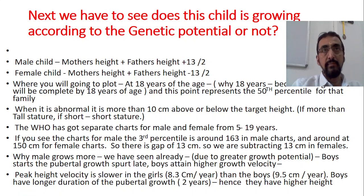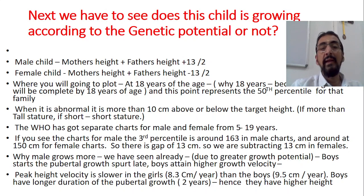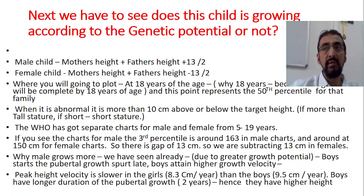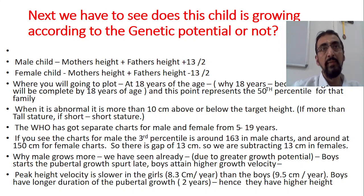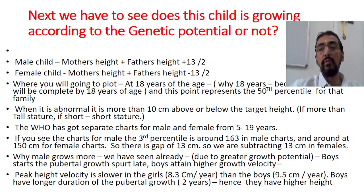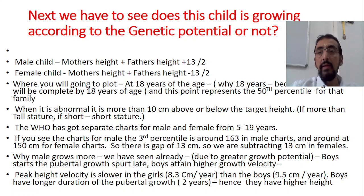Where do we plot this result from the parental height formula? We plot it at the eighteenth year of age on the growth chart, because we know the mother's and father's height and the mean average. When the child reaches eighteen years, the maximum height according to genetic potential can be seen. Growth is completed by eighteen years, and this point represents the fiftieth percentile of that particular family.